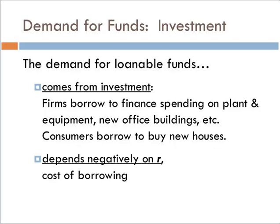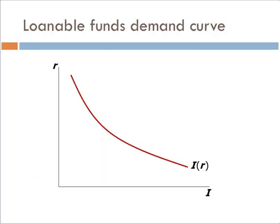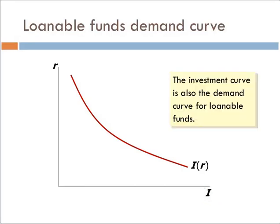Investment is going to depend negatively on the real interest rate. The real interest rate has the interpretation of being the cost of borrowing. If the cost goes up, you want to borrow less; if the cost goes down, you borrow more. So we can draw this out with the real interest rate on the vertical axis and investment on the horizontal axis — this gives us the investment function, which within this simplified model is our demand for loanable funds.